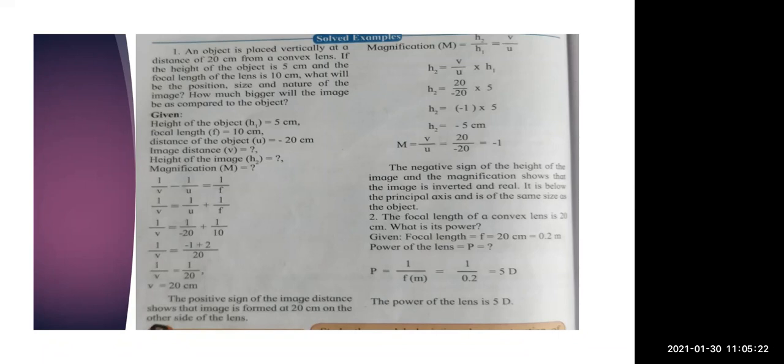V = +20 cm confirms the image is on the other side of the lens. If V is positive, the image is on the other side of the lens. If V is negative, the image is on the same side as the object. Underline this: positive V means image is on the other side; negative V means image is on the same side.